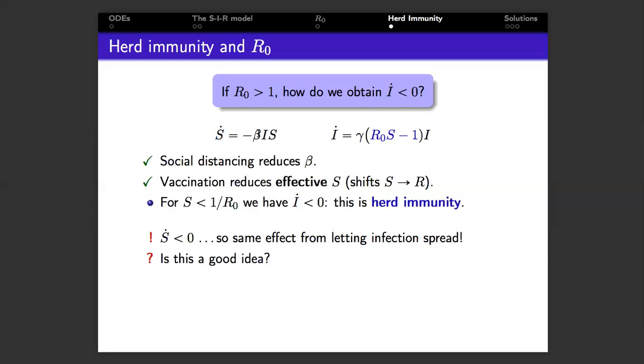What this means is that eventually so many people have become infected and then developed an immunity that the virus can no longer spread easily in the population and hence infections start to fall off. Another way of achieving herd immunity is just to let the infection spread, because as it does S always decreases.